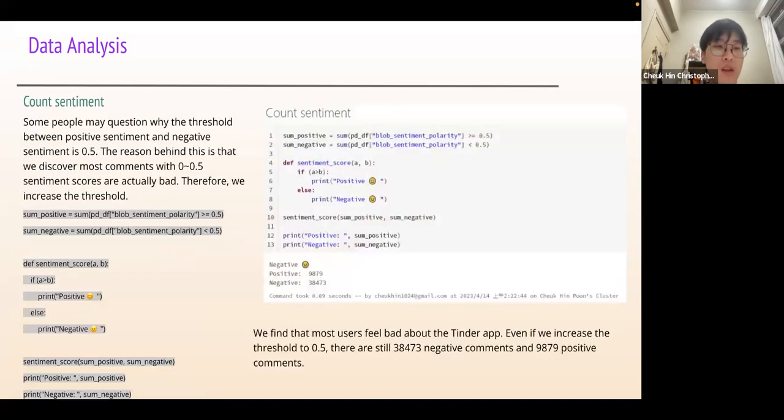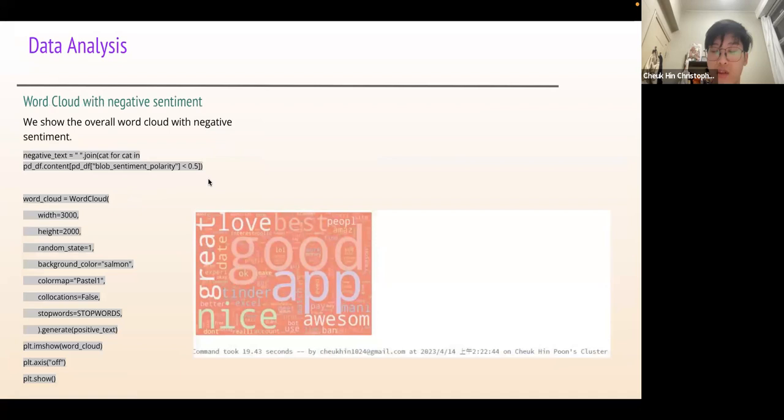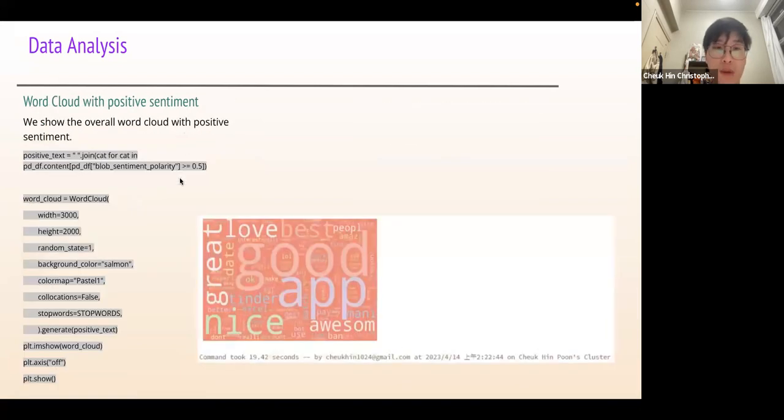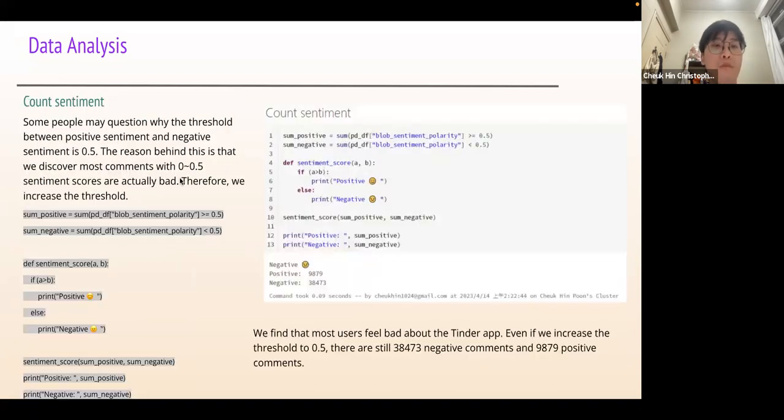Some people may question why the threshold between positive sentiment and negative sentiment is 0.5. Because we discovered most comments with 0 to 0.5 sentiment score are actually bad comments. Therefore we increase the threshold, but even if we increase the threshold to 0.5, there are still about 38,000 negative comments and 10,000 positive comments. Most users still feel bad about the Tinder app, even if we increase the threshold.